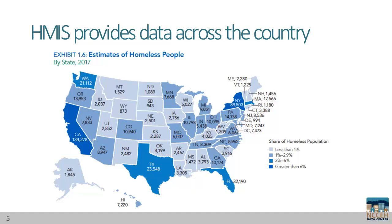Notice that North Carolina has a little over 2% of people experiencing homelessness in a year, while 50% are in just 5 states – Washington, California, Texas, Florida, and New York. HMIS made this data possible.